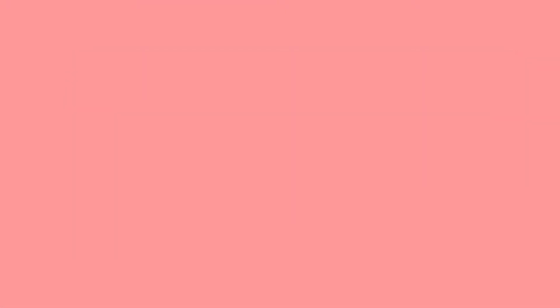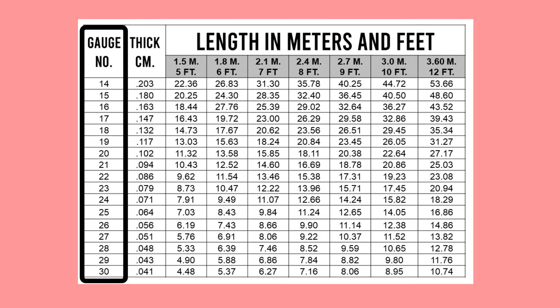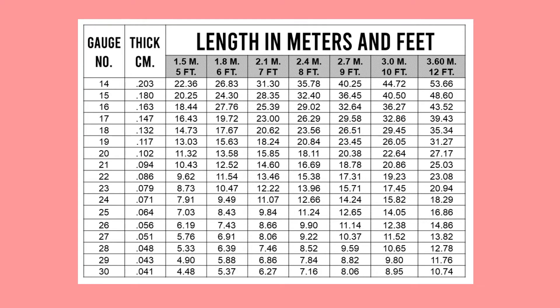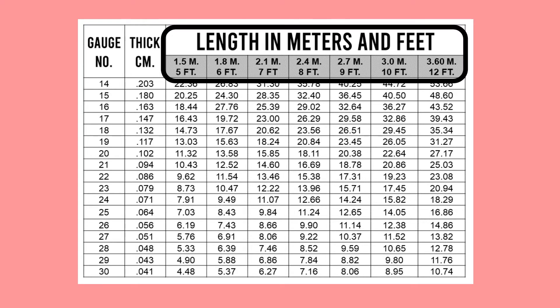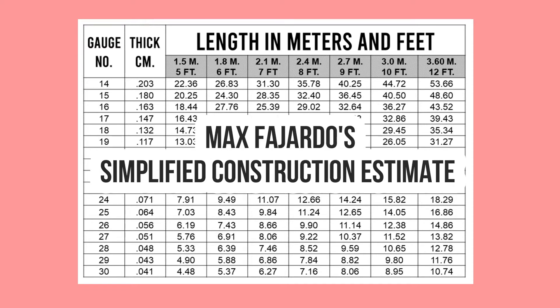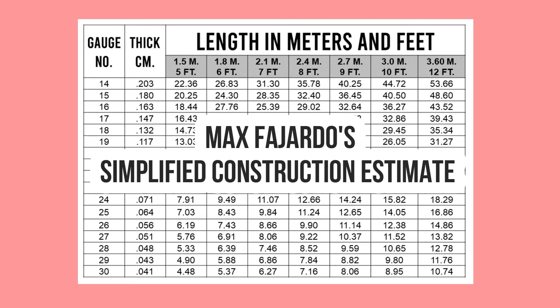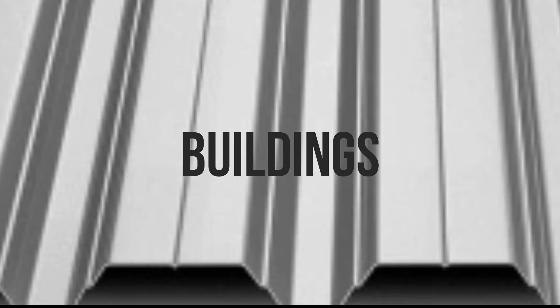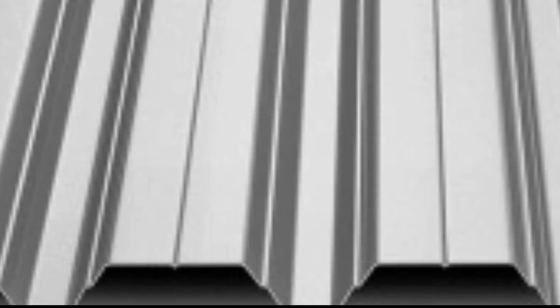It is said that distinguishing thickness between gauges of GI sheet is difficult even with the aid of a caliper, and gauge means thickness expressed in terms of hundredths of an inch. That is why the only way one could be certain he is buying the right thickness is by weight measure. The table flashed on screen presents the various weights of GI sheet according to its length and gauge number, found on page 204 of Max Fajardo's Simplified Construction Estimate, 3rd edition. Since GI sheet is the most common roofing material, this discussion will primarily focus on GI roofing estimate.